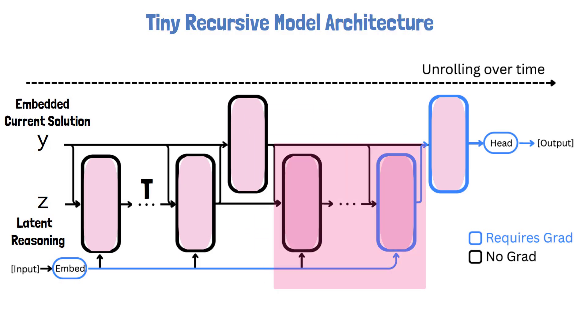We then repeat the same process. The model runs another t steps of refining the latent reasoning z, now with the new output embedding y, and afterwards again refines y using the new latent reasoning z. The diagram only shows two cycles, but in practice this nested loop runs for n cycles, another hyperparameter of the model. Finally, the output embedding y is fed into a trainable output layer that produces the final tokens.